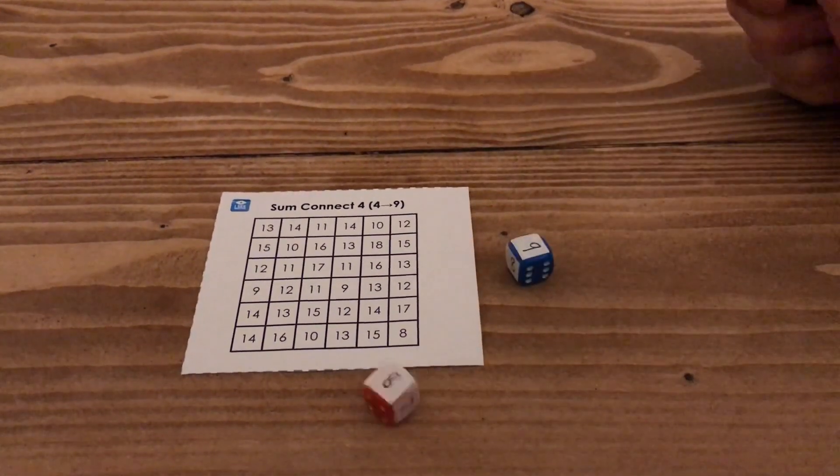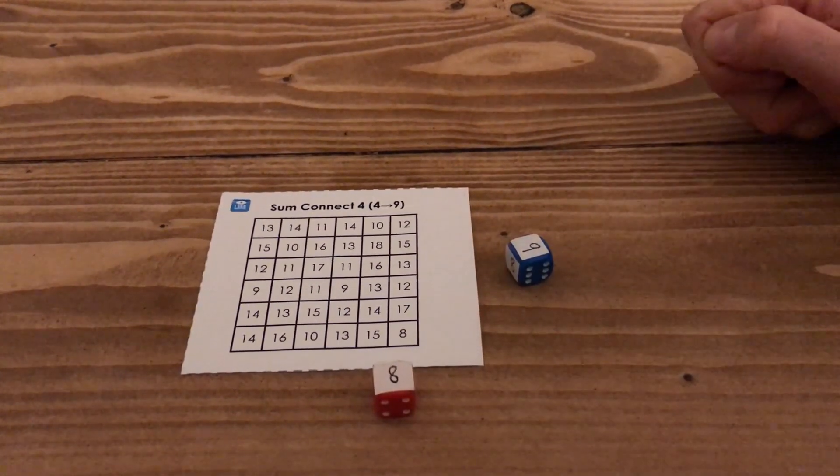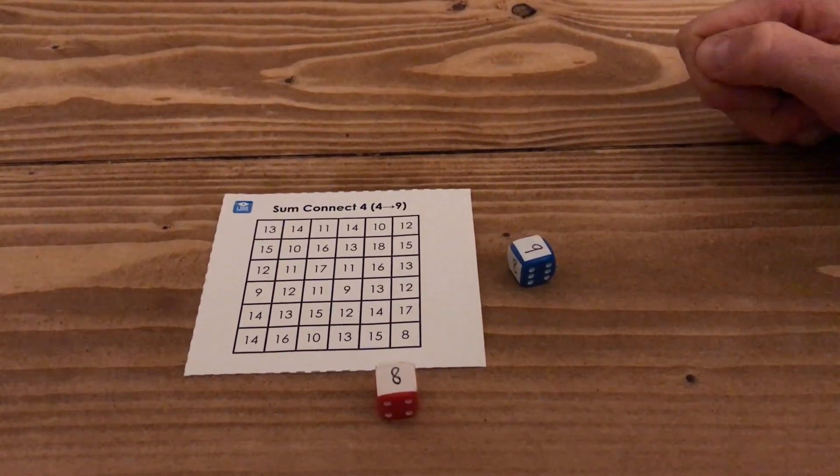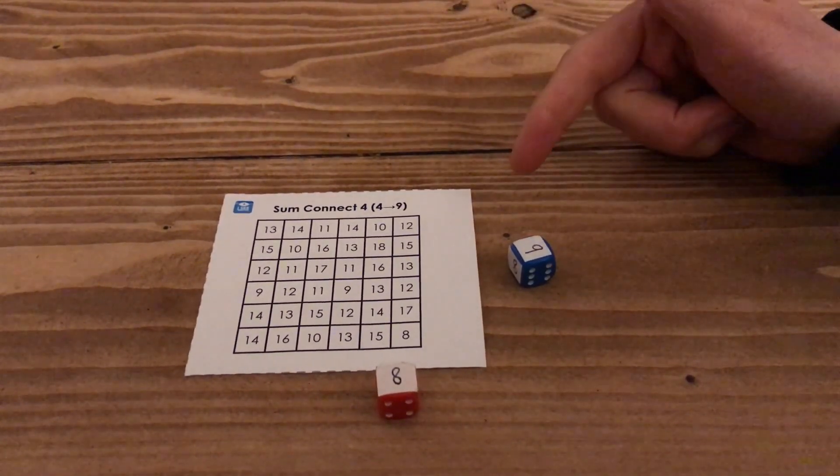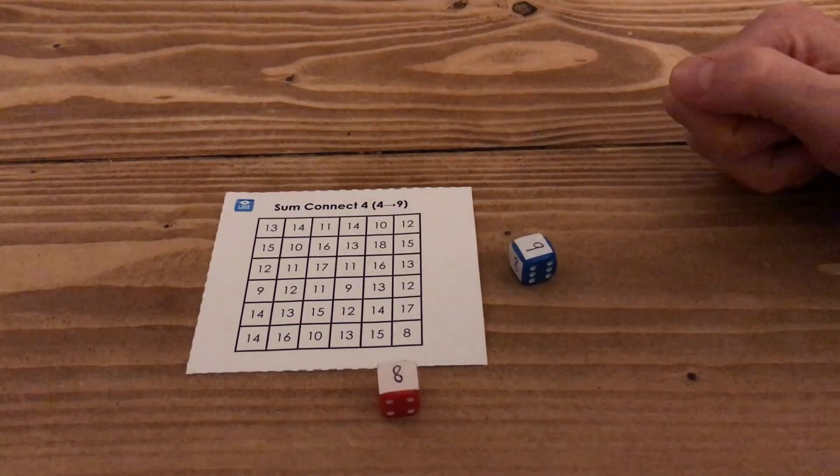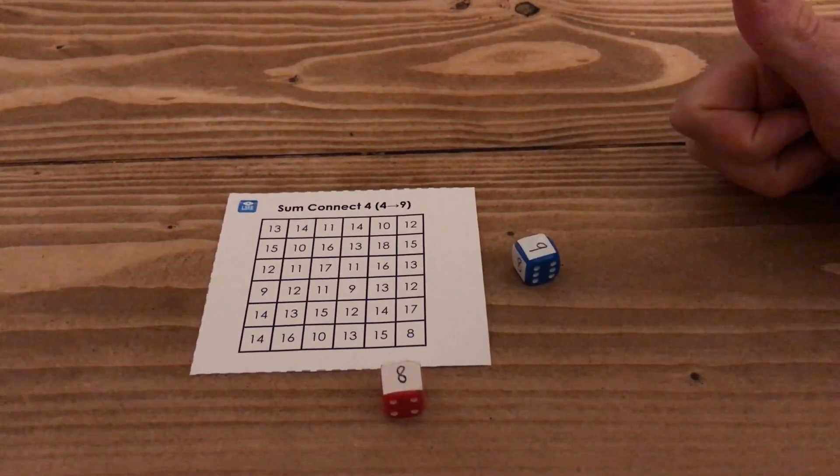So then we roll the dice and there I've got nine plus eight. Now I'll generate lots of calculations where the answer will be more than ten and these are calculations that children will need lots of practice at, particularly in year two.